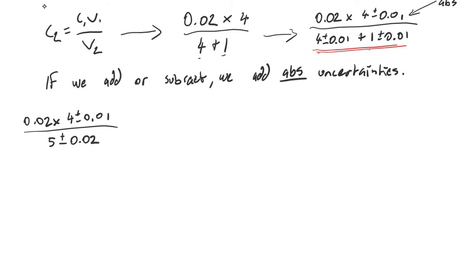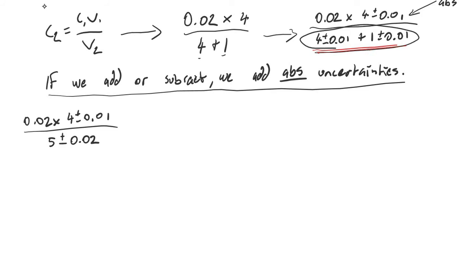When putting in your sample calculation, if we're adding or subtracting, that's the example you should use — where you've added uncertainties to get your V2, your final volume.